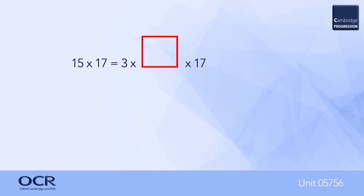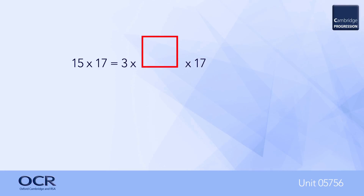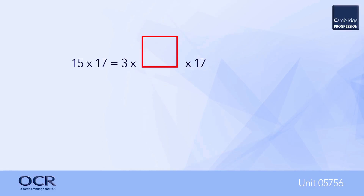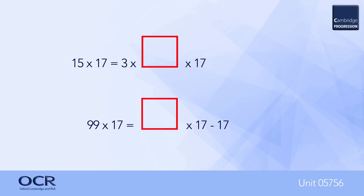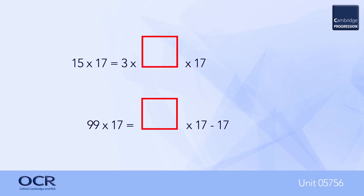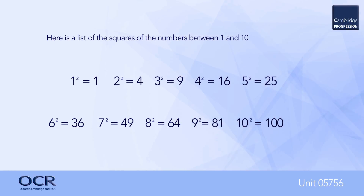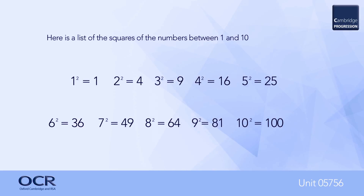Questions such as those shown here simply require recognising a missing factor. Thus: fifteen multiplied by seventeen equals three multiplied by something multiplied by seventeen — learners must recall that fifteen equals three times five, so five will be written in the answer box. For ninety-nine multiplied by seventeen equals something multiplied by seventeen minus seventeen, learners must recognise that ninety-nine is equivalent to one hundred minus one, so one hundred will be entered in the box. Learners must know the square numbers up to one hundred — all too often, while there is recognition that four is two squared or forty-nine is seven squared, learners forget that one is also a square number: one is one squared.